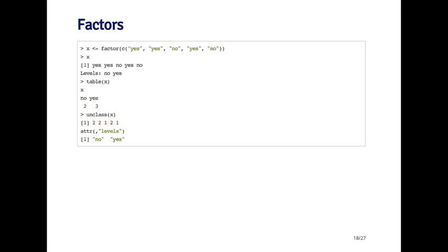I can call table on this factor and it'll give me a frequency count of how many of each level there are. For example, it'll tell me that there are two nos and there's three yeses.